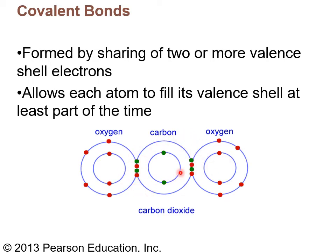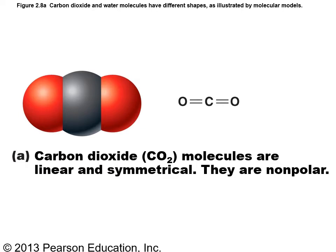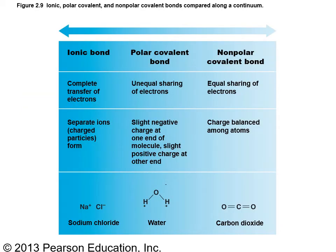This is a covalent bond — sharing electrons, not transferring. This represents carbon dioxide, where two pairs of electrons are shared on each side. A simple version is drawn with two lines instead of dots, showing an equally shared relationship. The molecule is linear, symmetrical, balanced — and it is non-polar.